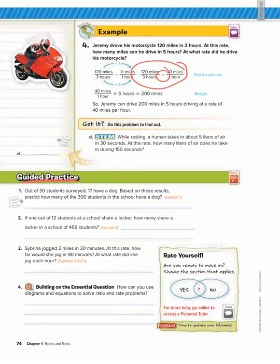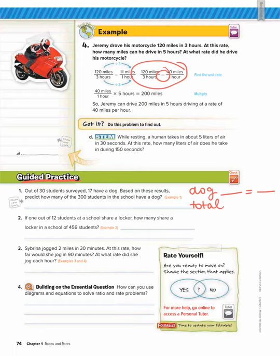Number one says: out of 30 students surveyed, 17 have a dog. Based on these results, predict how many of the 300 students in the school would have a dog. We're comparing the number of students that have a dog to the total number of students. When we set up our proportion, the numerators and denominators need to have the same units. So the numerator is the number of people who have a dog and the denominator is the total number of students — 17 out of 30.